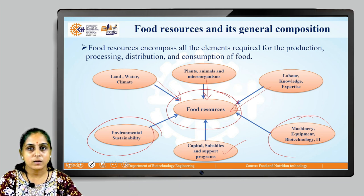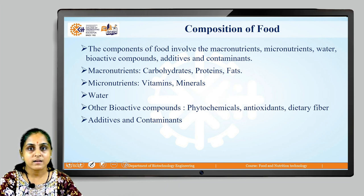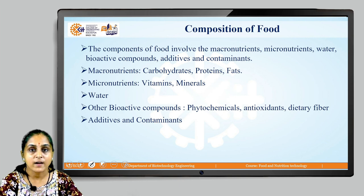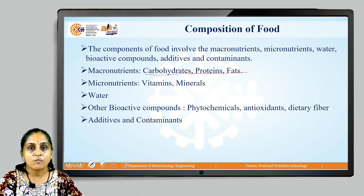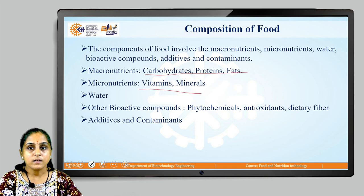Let us now understand the general composition of food. Food involves macronutrients, micronutrients, water, bioactive compounds, additives and contaminants. Examples of macronutrients are carbohydrates, proteins, and fats. Examples of micronutrients are vitamins and minerals. Water is an integral part of food. Bioactive compounds include antioxidants, dietary fibers, and phytochemicals, along with additives and contaminants.